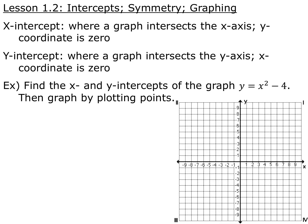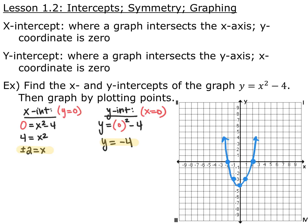If we have the graph y equals x squared minus 4 and we want to find the x and y-intercepts, we're going to set each coordinate equal to 0 and find the other. To find my x-intercept, I let my y-coordinate be equal to 0, then solve for x. I added 4 to both sides and took the square root. Whenever you take a square root, you have to have plus or minus, so x equals plus or minus 2. Those are my two x-intercepts.